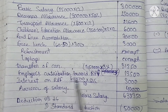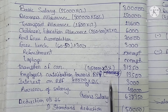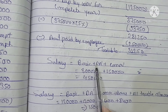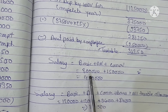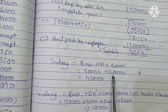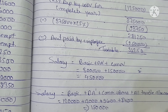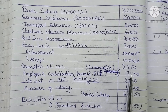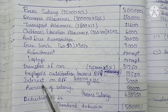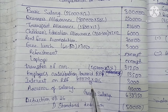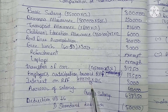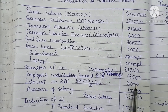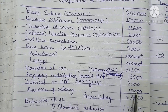Employer contribution towards RPF: the taxable portion uses the formula basic plus DA special plus commission. Basic is ₹3,00,000 and DA special is ₹1,50,000, totalling ₹4,50,000. The taxable excess contribution on ₹4,50,000 comes to ₹13,500. Interest on RPF: the rate is 10%, exempt rate is 9.5%, so only 0.5% is taxable on ₹60,000, giving ₹3,000.